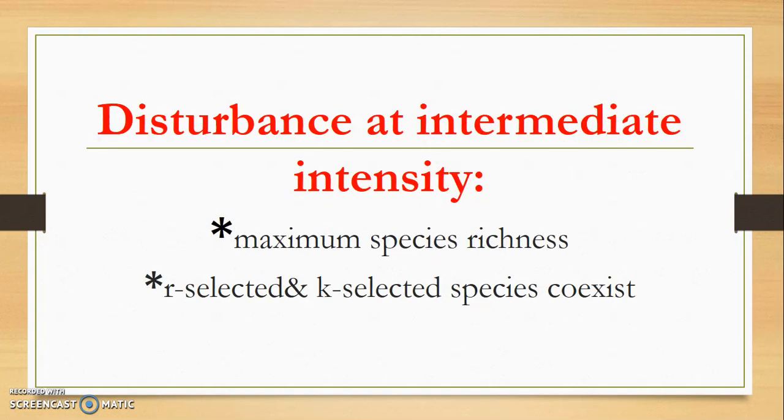This is the disturbance at intermediate intensity. Maximum species richness. So the point you have to note that is at which state of intensity of disturbance maximum species richness will be there.